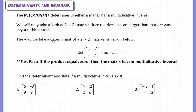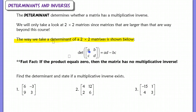Next up we have determinants and inverses. The determinant determines whether a matrix has a multiplicative inverse. We're not going to get into how to find an inverse — we just want to know whether or not a matrix has one. When finding a determinant, we only look at 2×2 matrices. The determinant of a matrix is found by taking the number in the first row, first column — call it A — and multiplying that by D, then subtracting B times C. So the formula is AD minus BC. That gives us the determinant.